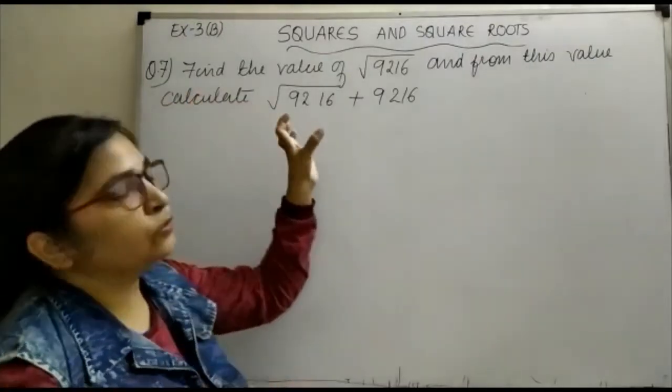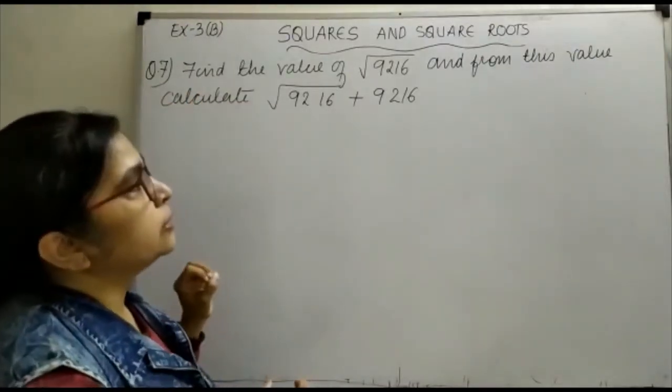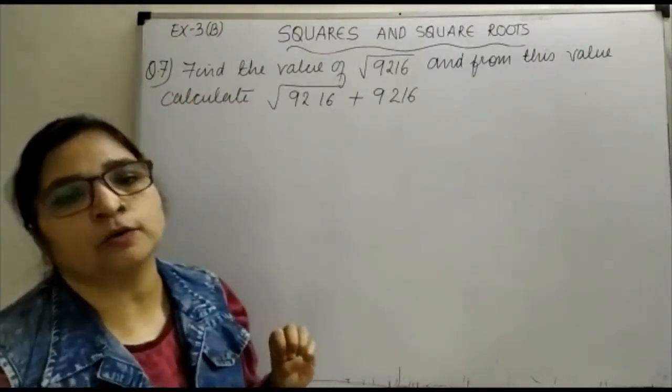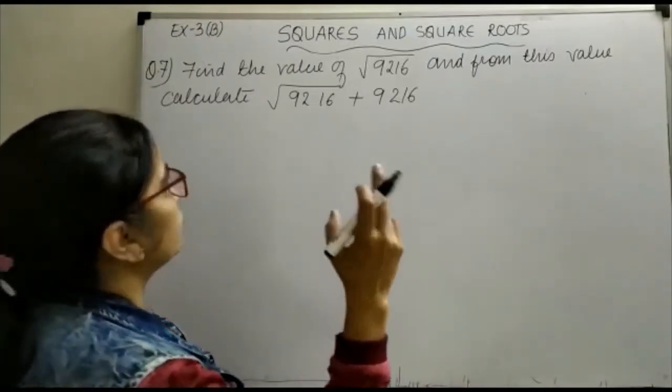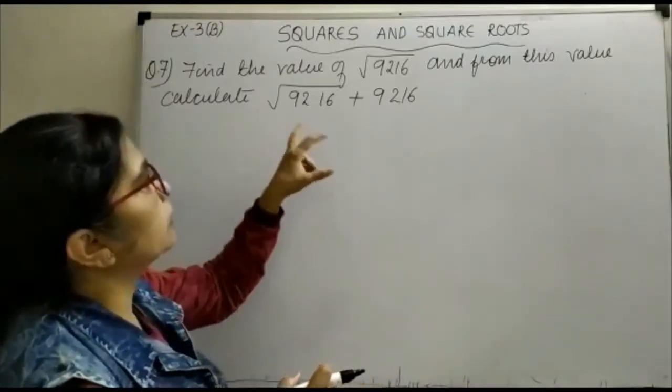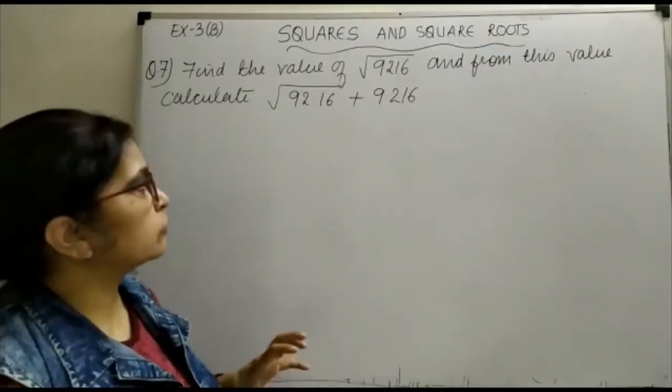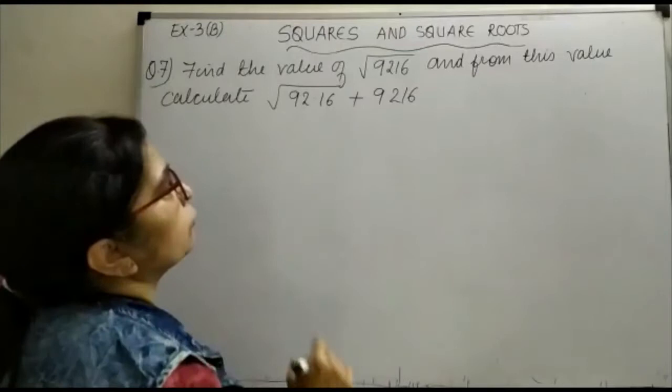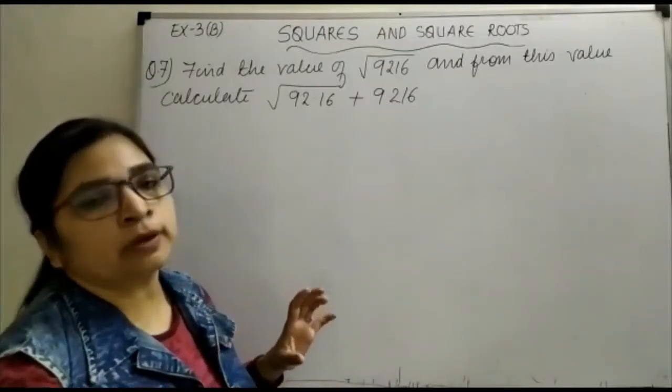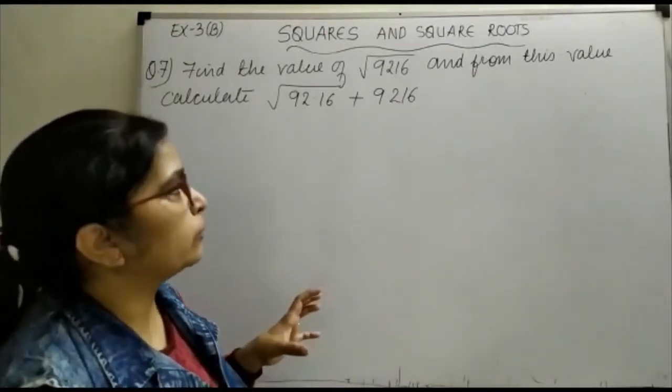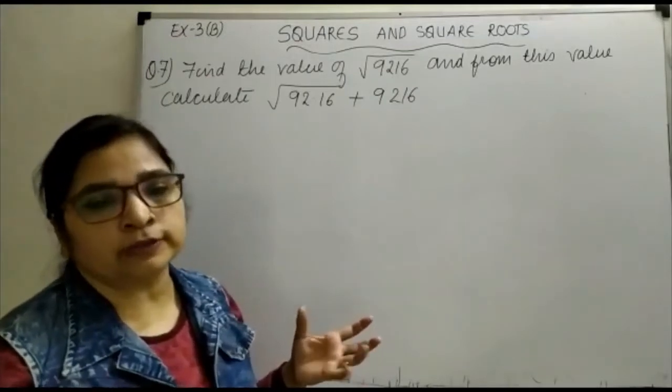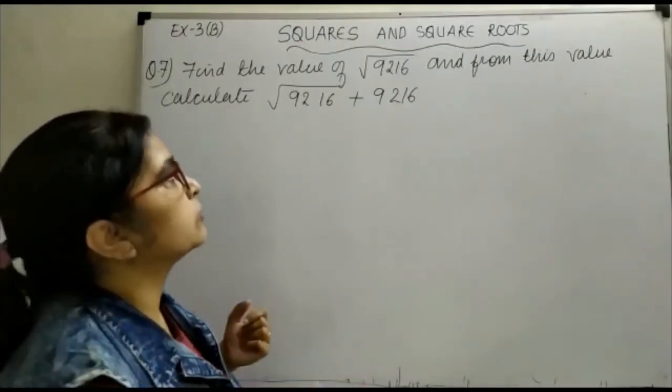Our question is: find the value of √9216, and from this value calculate √92.16 + 9.216. We have to evaluate this. So first, let us work out √9216. It will be easy if we go with the long division method.